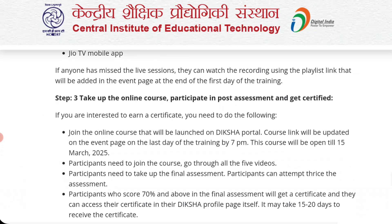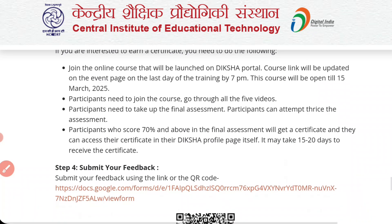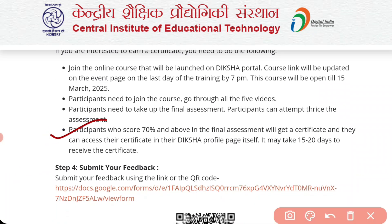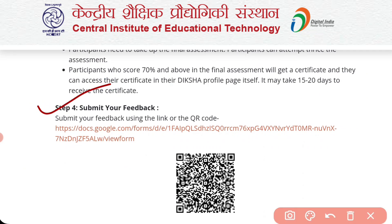Step 3: take up the online course, participate in the post assessment, and get your certificate. On the final day I will provide the course link for the Diksha portal. Click on the link, join the course, score 70% or more, and you will receive the certificate within 20 to 50 days in your Diksha portal. Step 4: submit your feedback form.